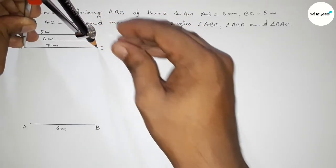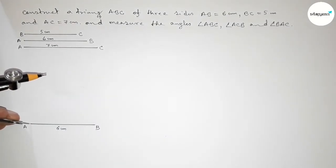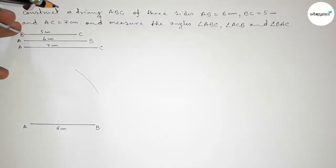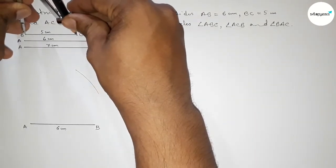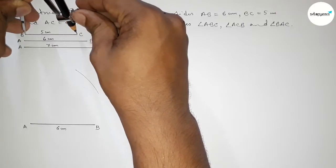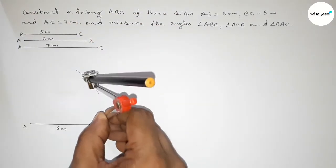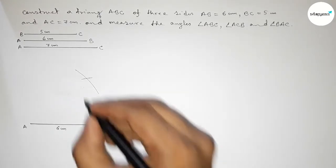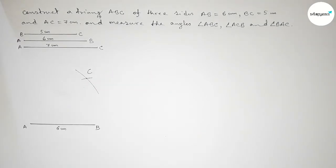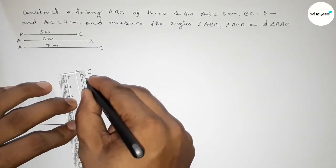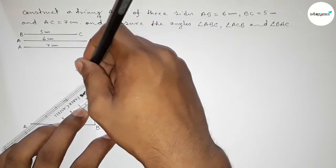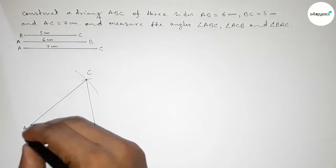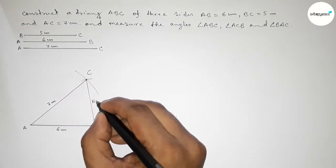Next, taking the length BC equal to 5 centimeters by using compass, putting the compass on point B and cutting here. Both curves intersect at a point, so taking point C. Now first joining B and C, then joining A and C. So we got triangle ABC. This is 7 centimeters and this is 5 centimeters.